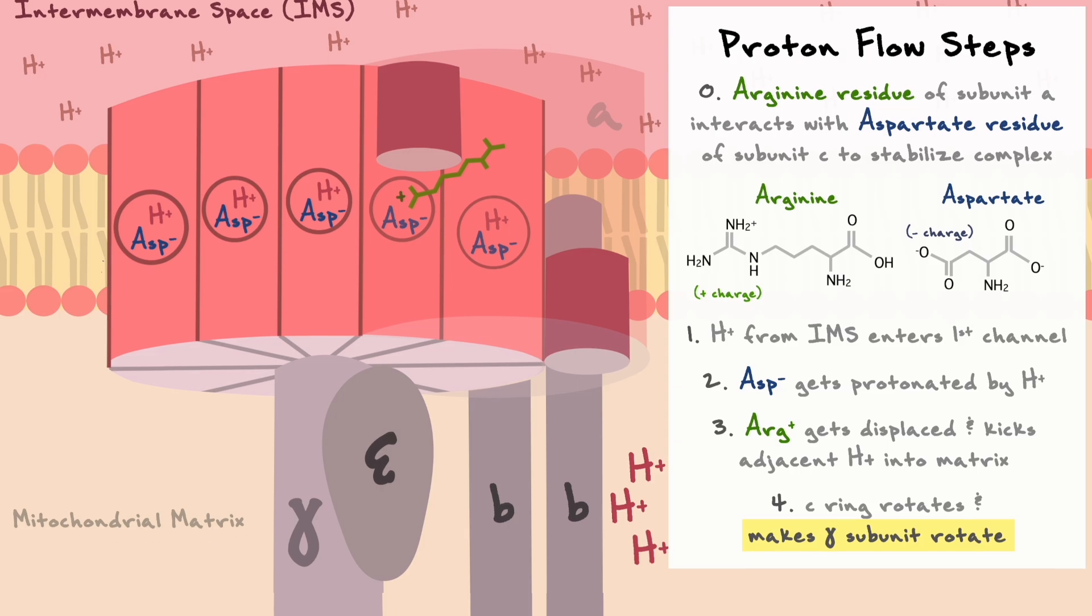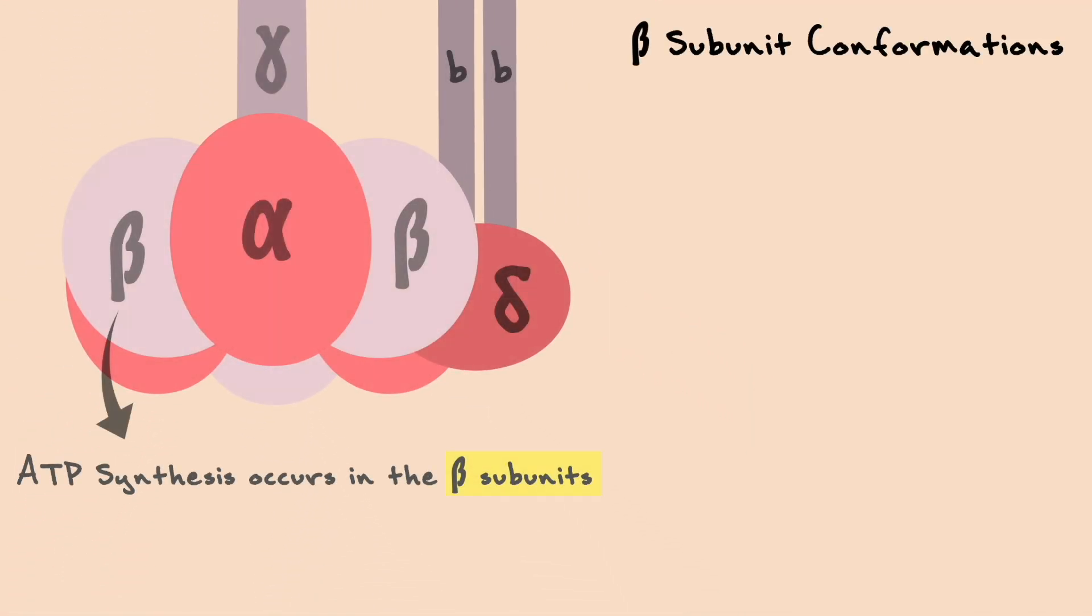With this process now in mind, let's discuss how this rotation serves to synthesize some ATP in the stationary beta subunits. For this, we need to discuss the three conformations that the beta subunits can adopt.